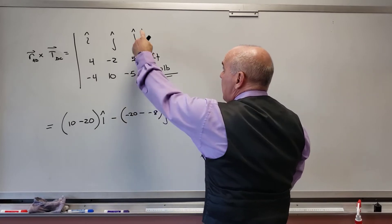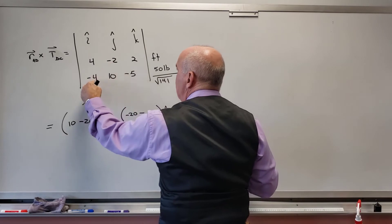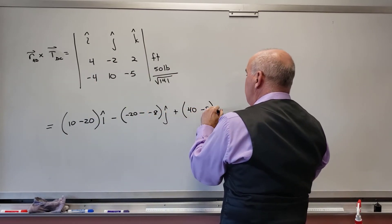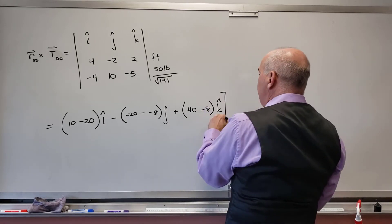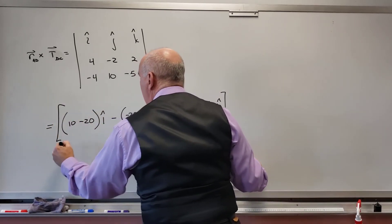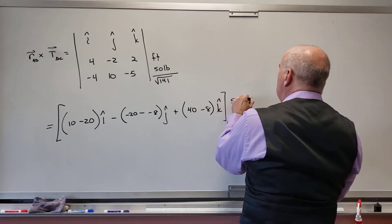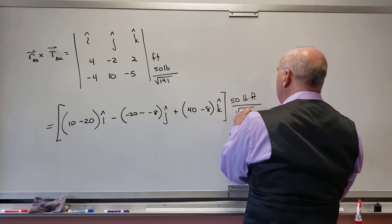Plus the k hat, I'm going to get 4 times 10, which is 40. And then minus -4 times -2, which is 8. And that's positive 8. So that's my k hat. And then all of this is multiplied by 50 pound-feet over radical 141.